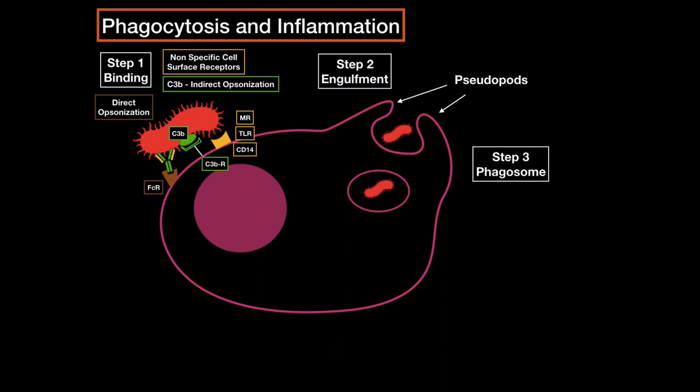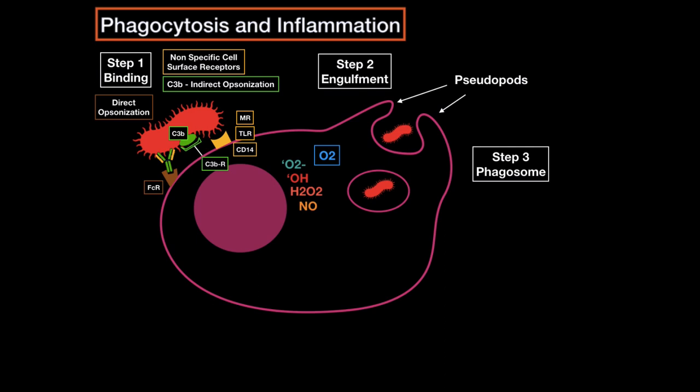When a phagocyte engulfs a bacteria, its oxygen consumption increases because it needs more energy. This increase in oxygen consumption produces reactive oxygen-containing molecules that are antimicrobial. Oxygen gets converted into superoxide, hydroxyl radicals, hydrogen peroxide, or even nitric oxide. In case the phagocyte is having trouble killing the bacteria, it will use this mechanism called oxygen-independent phagocytosis. Keep in mind these products are also toxic for the cell itself, which is why it makes them when it's having trouble with digestion. These products are generally called reactive oxygen species, and we secrete them into the phagosome in case the bacteria is stubborn and just won't die.